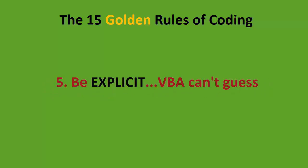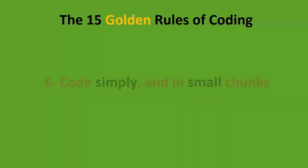Number five: be explicit — VBA can't guess. By default, unless you code it differently, whenever your code executes it's going to execute on the sheet and workbook that you are looking at, and that may not be what you want it to do. We're going to cover this fully in the course, so don't worry too much at the moment, but just remember: be explicit.